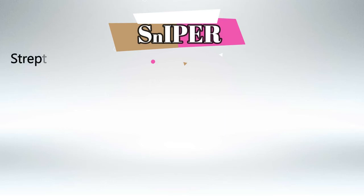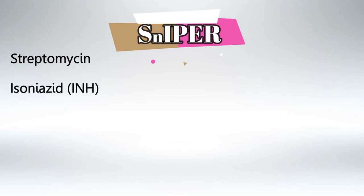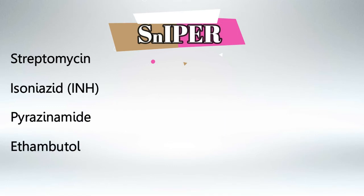S is for streptomycin, I for isoniazid which is also known as INH, P for pyrazinamide, E for ethambutol, and R for rifamycins. Now we'll talk about the high yield information for each medication that you'll need to remember for Step 1.